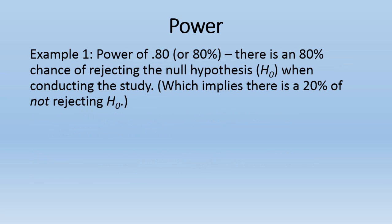Let's take a look at a couple of examples. A power of 0.80 or 80% means there is an 80% chance of rejecting the null hypothesis when conducting the study — assuming that the null is really false in truth. That means the remainder, or 20%, is our chance of not rejecting the null, or accepting the null.